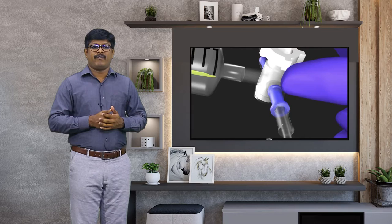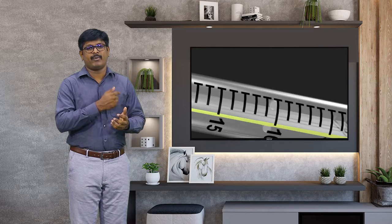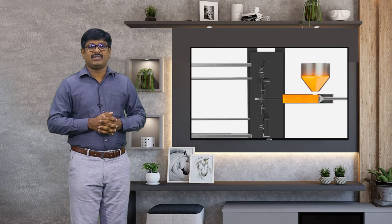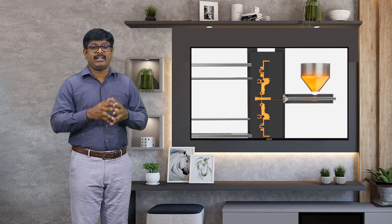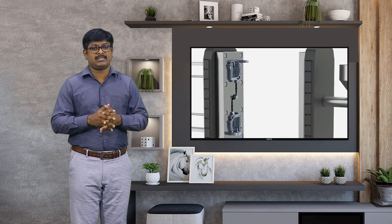Just like when we push a syringe, the medicine comes out through the other end and enters the body — similarly, molten metal is poured inside and with the help of the injection plunger, it is sent into the mold cavity very fast and at high pressure, where it solidifies rapidly. This solidification takes from a few milliseconds to a few seconds.